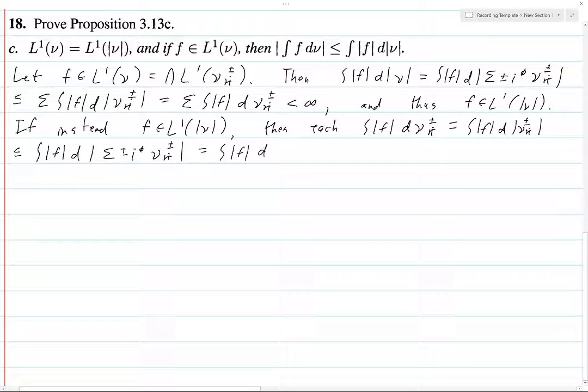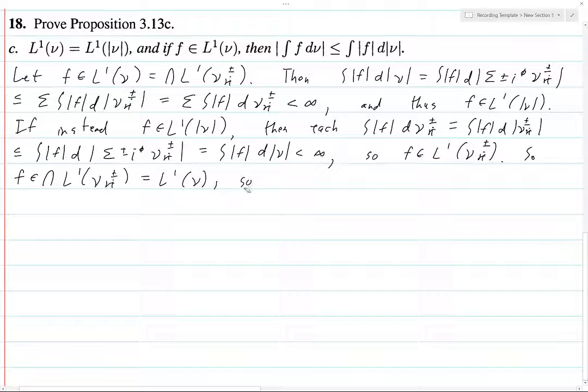And then what's this equal to? This is equal to the integral of |F| d|ν|, and that's finite. So F is in L^1(ν_{ri}^{±}) for whichever one this should match up with this guy. But it doesn't matter because it holds for all of these. So F is in the intersection of all of these L^1(ν_{ri}^{±}). But what is this? This is just equal to L^1(ν). L^1(ν) is equal to L^1(|ν|).